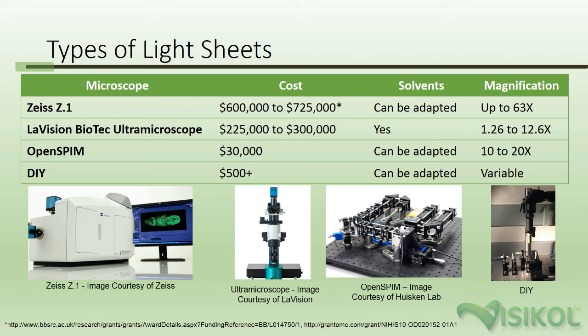Currently, there are only a handful of commercially available light sheet microscope devices, including the Zeiss Z1 and the LaVision Ultra Microscope 2. While these devices might be available at a location nearby, there are some considerations to be taken into account before you start using one or buy your own. The first is whether or not the instrument is compatible with solvents. Many light sheet setups, such as the Z1, use water-dipping objectives, whereas immersion in the solvent can damage the objectives.